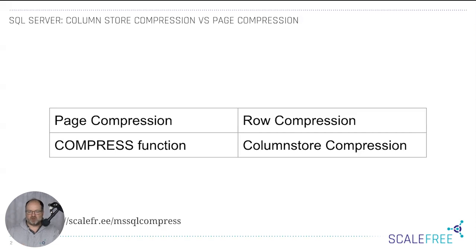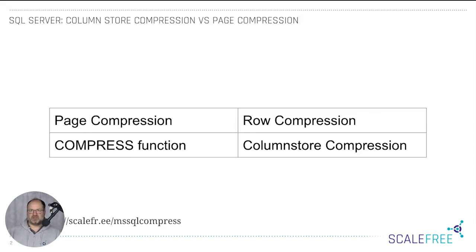Page compression always performs row compression in SQL Server, but goes further — it looks at redundant data inside your rows. So if you have multiple rows with similar data, like the same first names, it compresses that data.